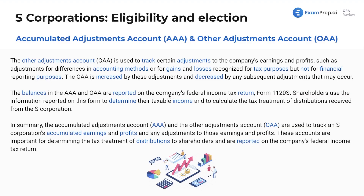This is more informational than anything; however, you may see a SIM where you have to adjust these amounts. Shareholders use the information reported on the form to determine taxable income and to calculate the tax treatment of distributions received from the S Corp. This is very similar to what we saw with C Corps in terms of filling those buckets — what is dividend income, what is considered return of capital. In summary, the AAA and OAA are used to track an S Corporation's accumulated earnings and profits and any adjustments, and these accounts are important for determining the tax treatment of distributions and are reported on the tax return.